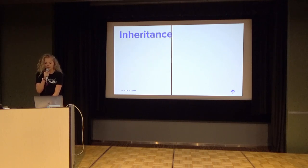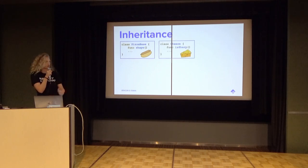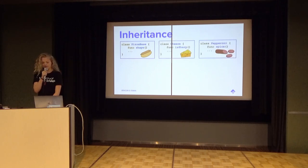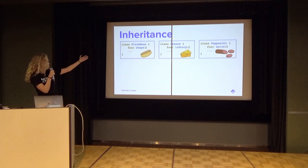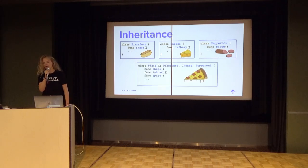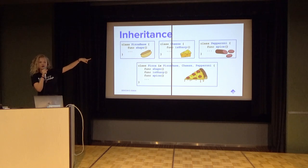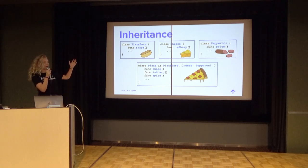Here's a quick background on what each one is. Let's say I want to make a pizza. We have a pizza base class and it has a shape, a cheese class with something about its flavor, and a pepperoni class — is that pepperoni spicy? When we want to make the pizza, we can inherit all of the previous classes. The pizza is a pizza base, cheese, and pepperoni, and it automatically gets all the information from those classes. So the pizza is now the same shape as whatever it inherited.